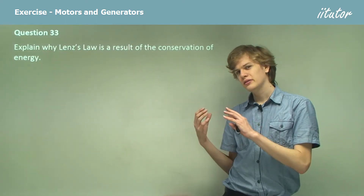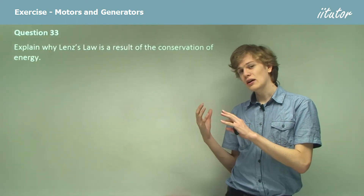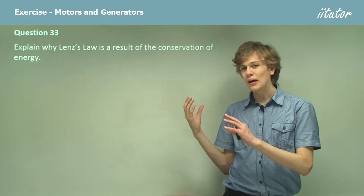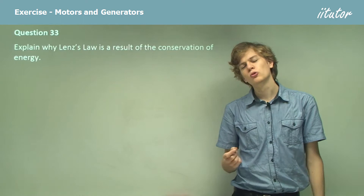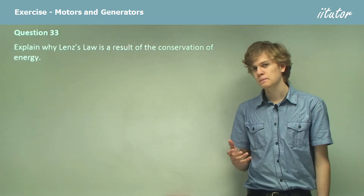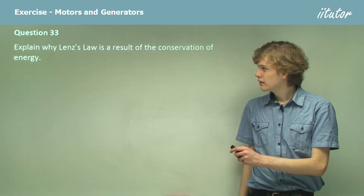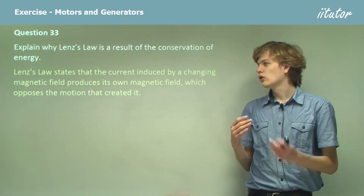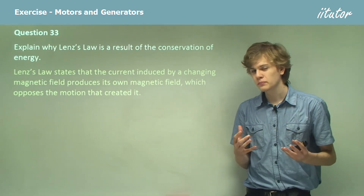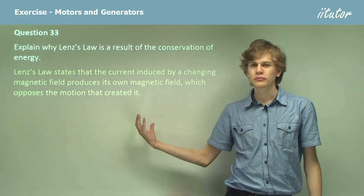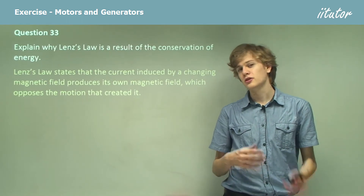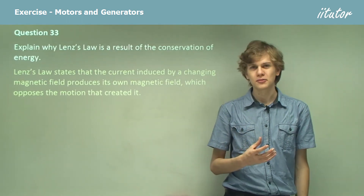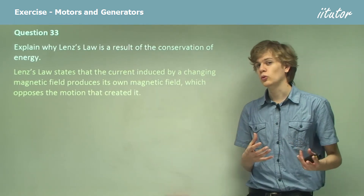Well, it's because if we didn't have Lenz's Law, we'd be able to move a magnet perpetually in order to create an unlimited supply of electricity. Lenz's Law states that the current induced by a changed magnetic field will oppose the motion that created it. So if we're trying to move a magnet past a conductor to produce an electric current, the magnet will be slowed down instead of just perpetually moving.